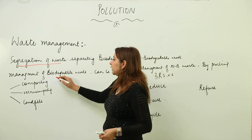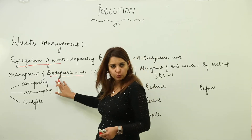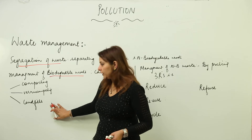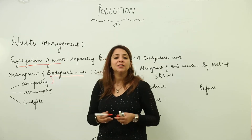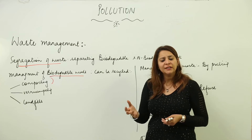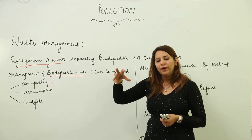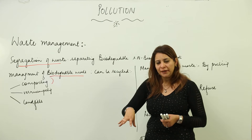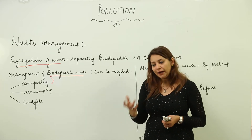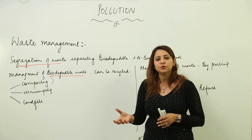The methods you can employ for the management of biodegradable waste are composting, vermicomposting, and landfills. Composting is when you have compost pits — you put the biodegradable waste into those pits where microorganisms grow and act on it, breaking complex substances into smaller ones.